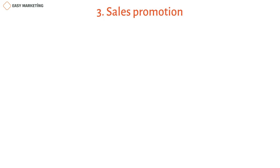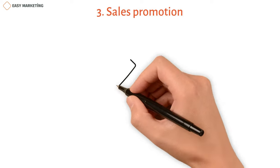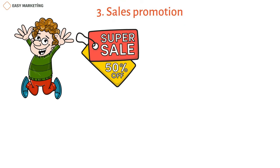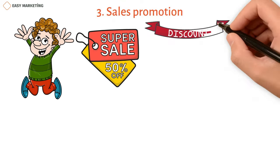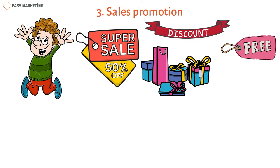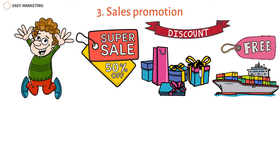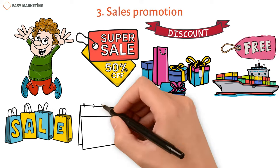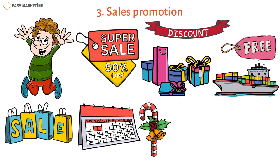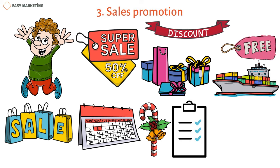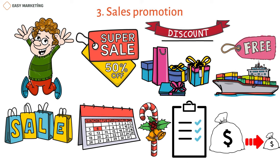Three: sales promotion. Consumers adore bargains. When they see 'on sale' or '50% off,' they get really excited. You can run a sales campaign using many different methods, such as discounts, coupons, free gifts, free samples, competitions, two-for-one deals, rebates, loyalty programs, and free shipping. Small, new businesses often use this method. By using it, you may be able to establish your place in the market and sell more of your goods. Make sure you have a plan for your sales promotion, or you'll lose money instead of making any.